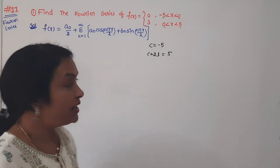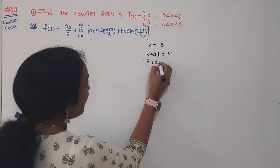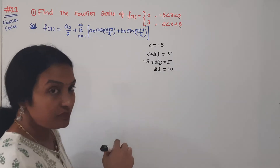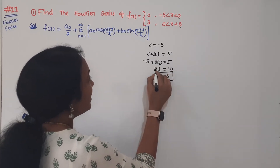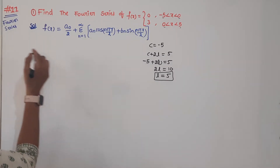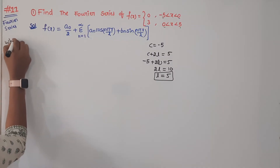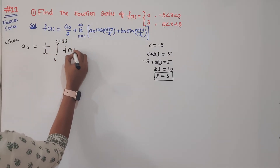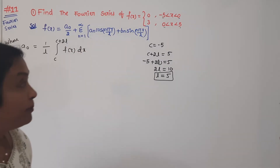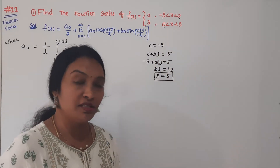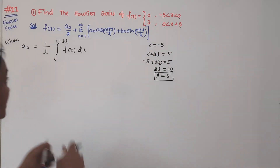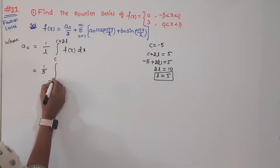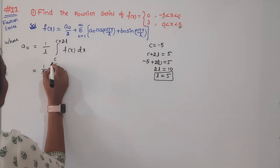Now, what is our A₀? A₀ is equal to 1 by L, integral from C to C plus 2L, of F(x) dx. Now C is minus 5, so limits are minus 5 to 5. L is 5, so we have 1 by 5, integral from minus 5 to 5, of F(x) dx.